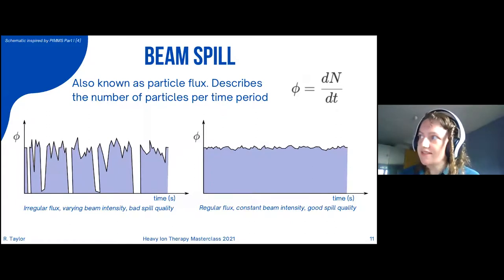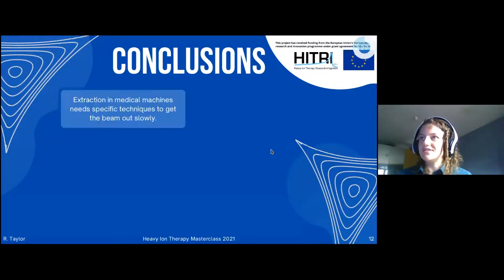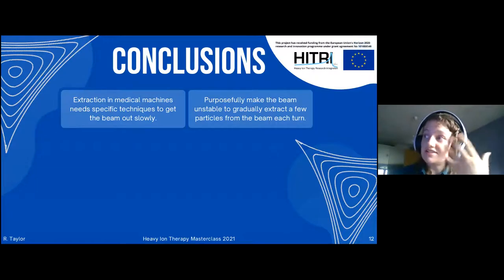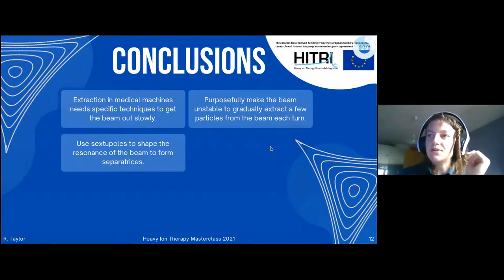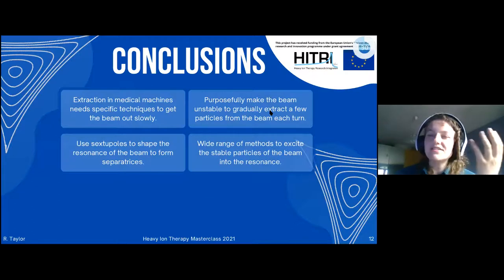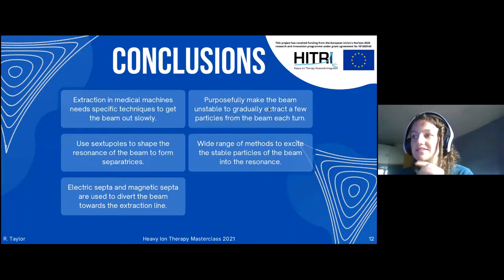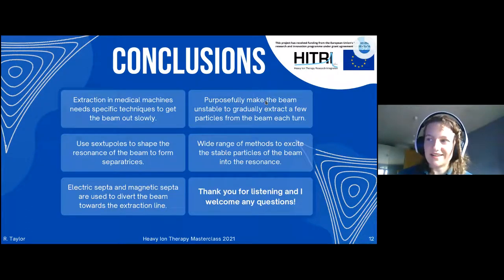What's the goal here in doing slow extraction? The measure of importance is called beam spill, also known as particle flux. It describes number of particles per time period. This is what we want to avoid: if the particles are being lost all at once and then nothing, you get these peaks, you get these troughs, and it means if we're giving this beam to the patient we can never be sure whether the particle is going to receive all of the intensity or none of the intensity. It's really very unreliable. We want to design our way in such a way that it's very smooth, we have this gradual intensity. To conclude, for extraction of medical machines we need specific techniques to get the beam out slowly. We purposefully make the beam unstable, gradually extract a few particles from the beam every time it turns. We use sextupoles to shape this resonance and form separatrices. There are lots of methods to excite the beam into higher resonances, and we use septum magnets to divert the beam towards the extraction line. Thank you for listening.